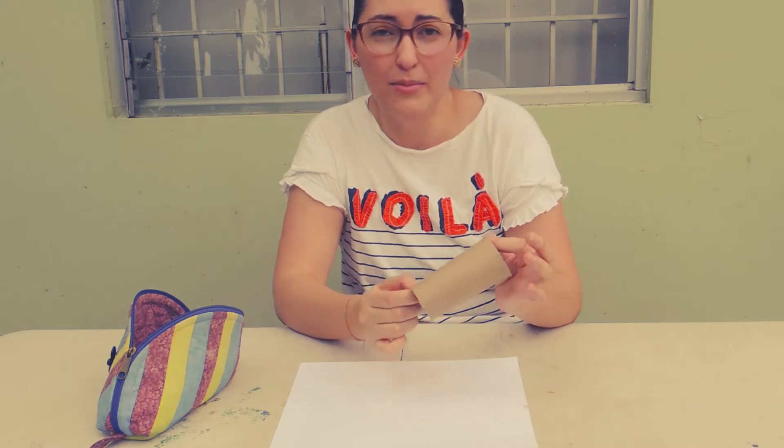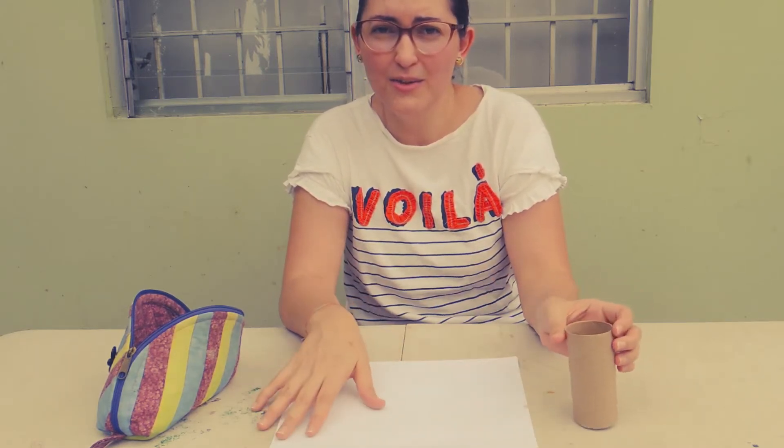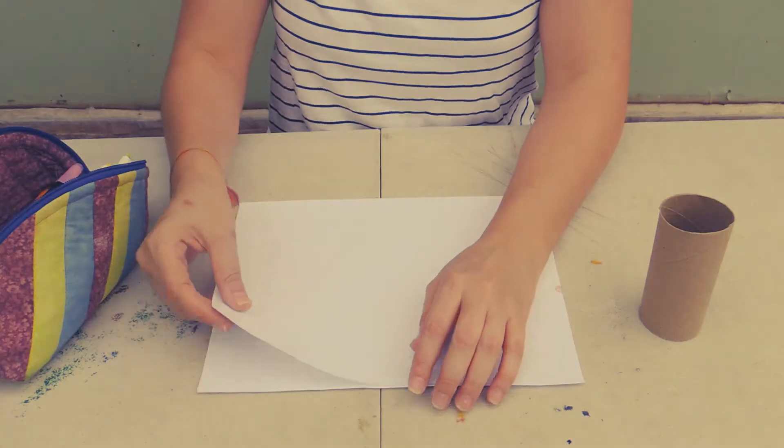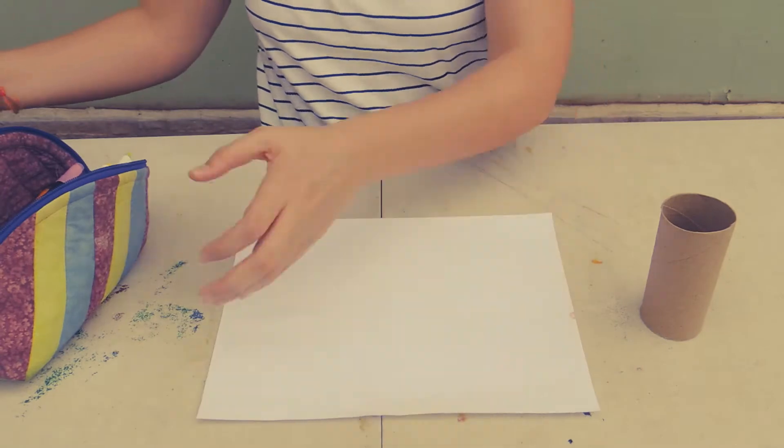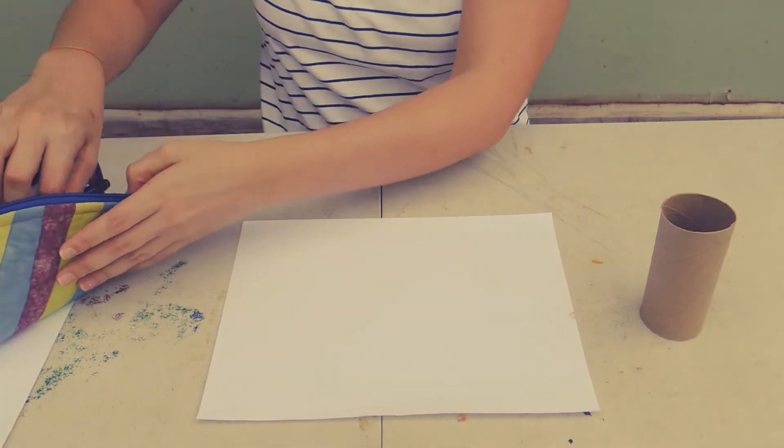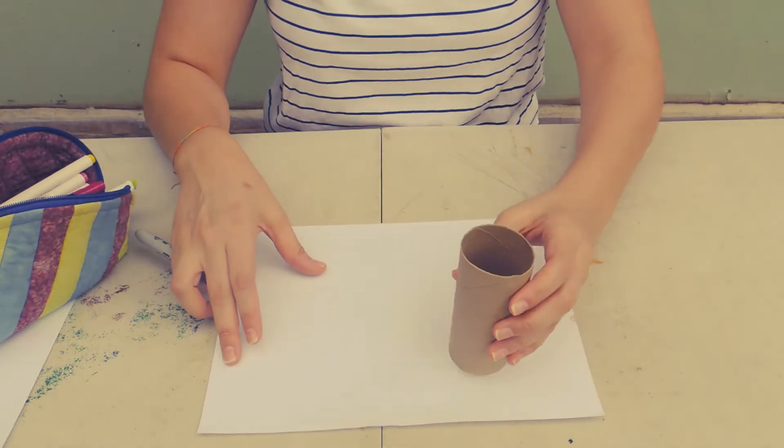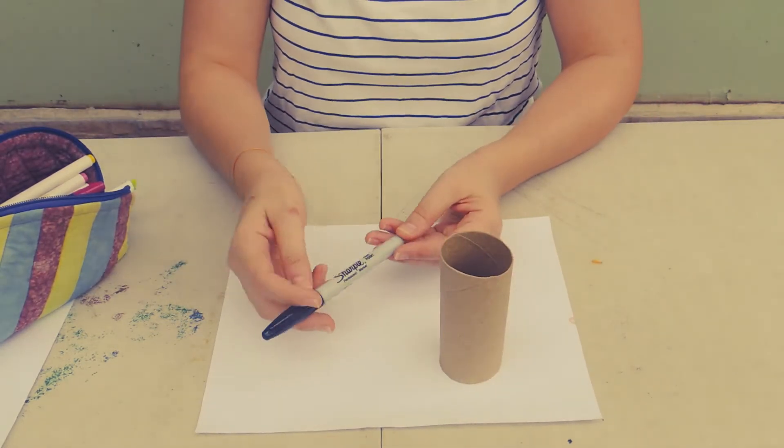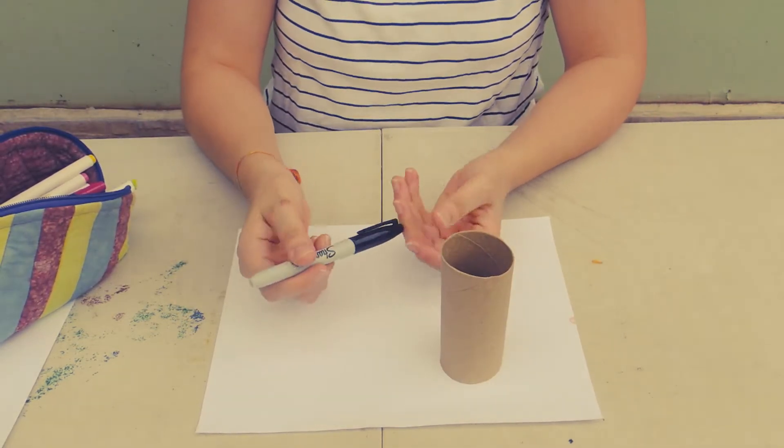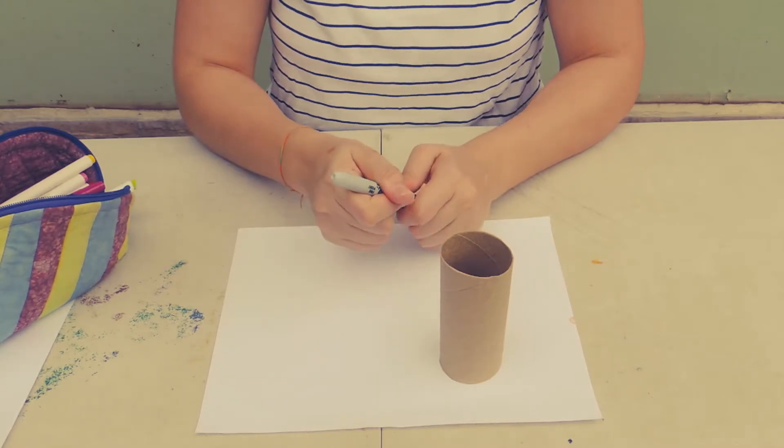You're also going to need an empty toilet paper roll like this. Once you have all these materials ready, you're going to begin. I'm only going to use one, but I'm going to have some extra here. You're going to take your toilet paper roll and you're going to need a black marker first. It can be a permanent marker or any marker that you have at home.